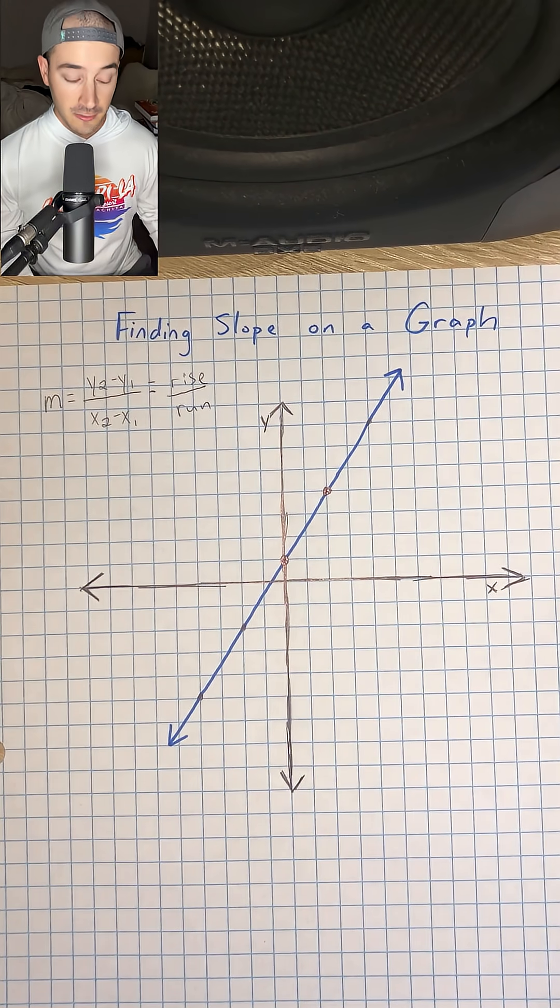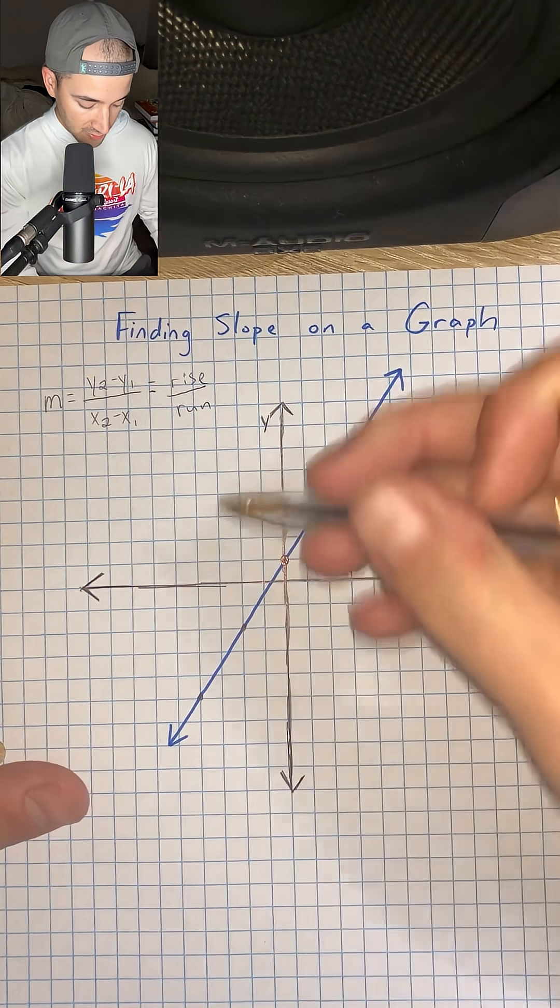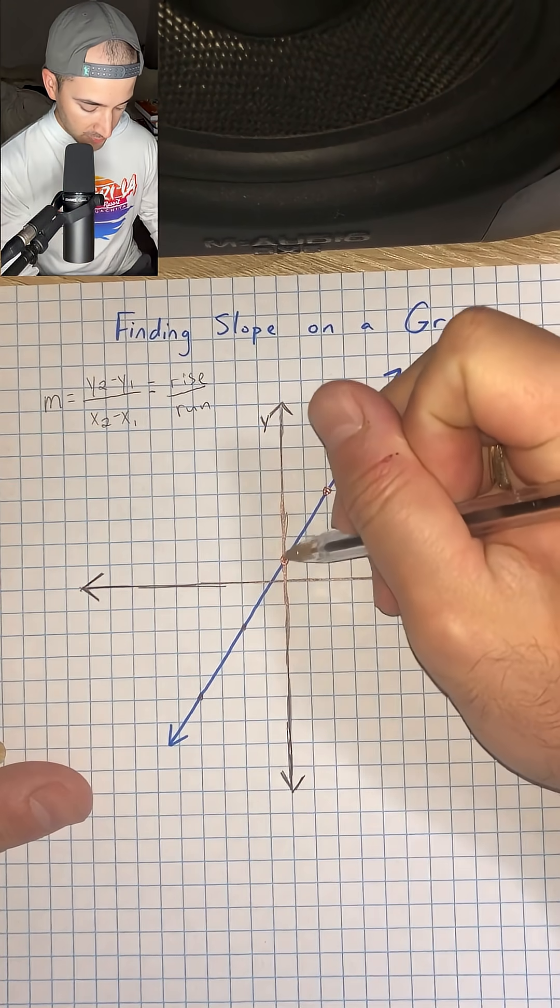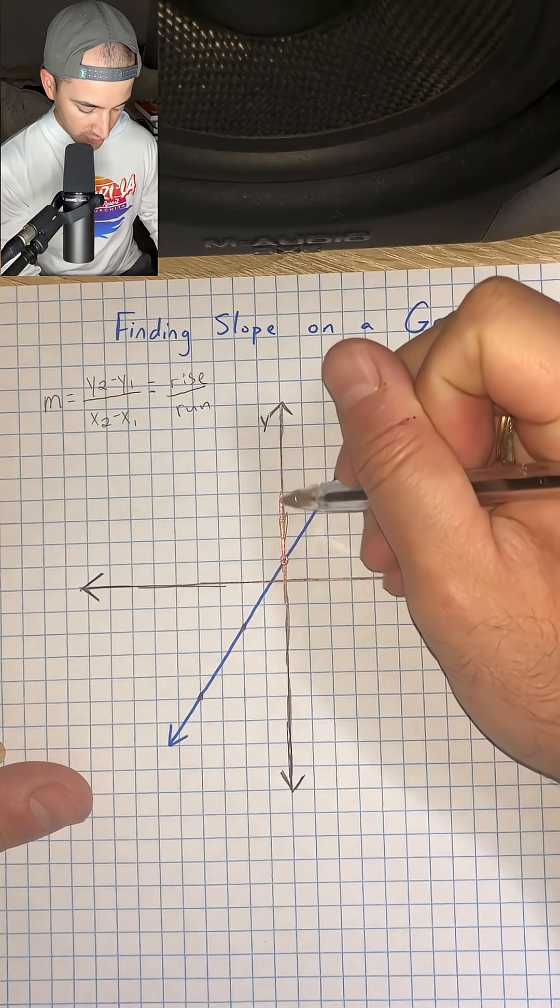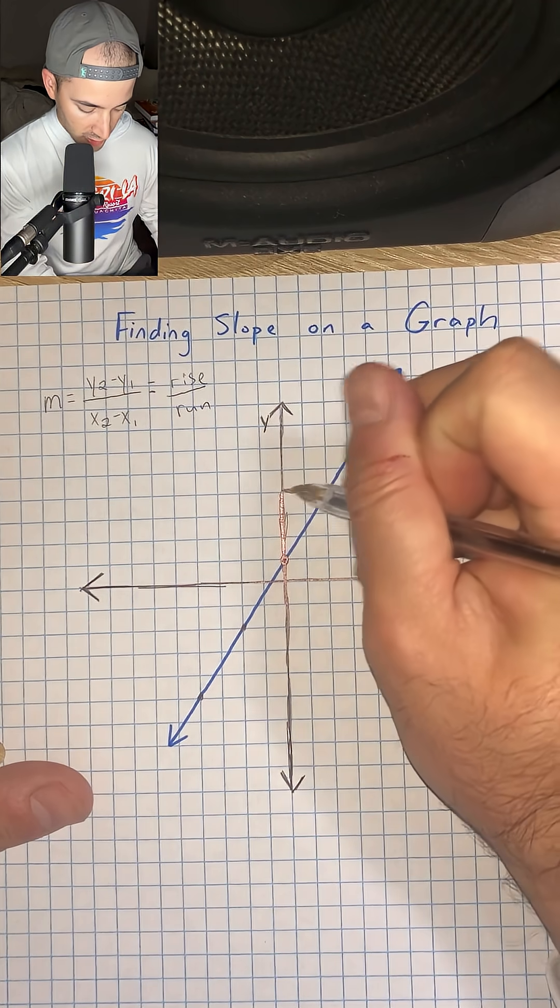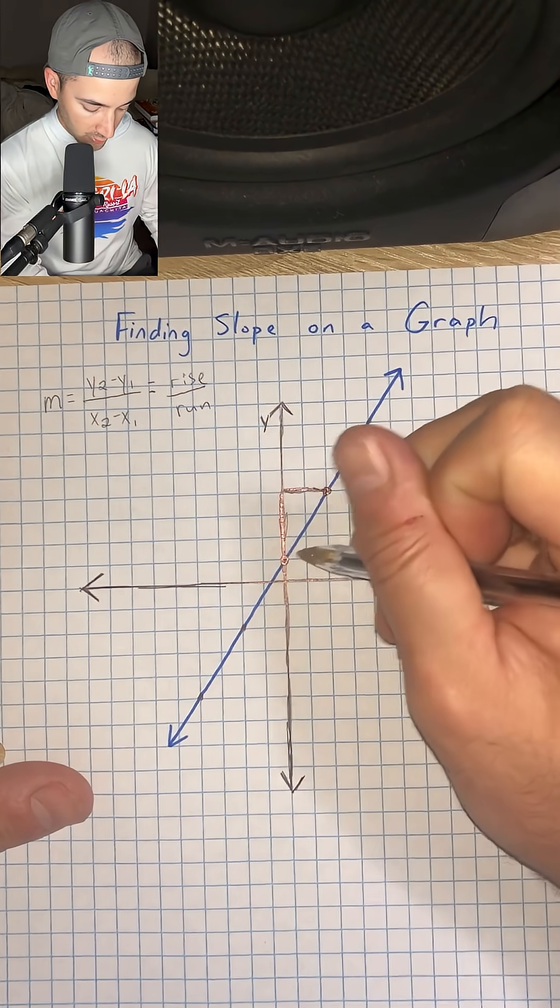So now I'm going to make a right triangle, and the way I do that is I use rise and I use run. So I'm going to rise up in this case until I get even with my next point, and then I'm going to run to the right. And so now I've formed a right triangle.